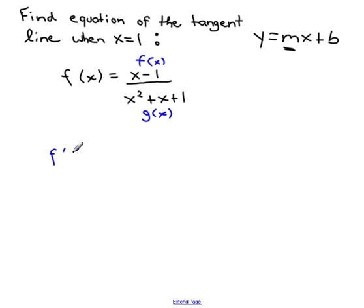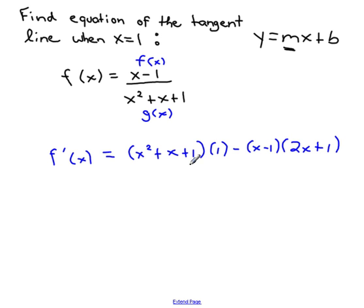So, the rule says to do, f prime of x is going to be, the rule says to do g(x), f prime of x. So, I'm going to recopy g(x). It says, don't touch your g(x), but derive your f(x). What's the derivative of x minus 1? Just 1. What does it then say? It says minus. You then do f(x), which is x minus 1. So, don't touch your f(x), but derive your g(x). What's the derivative of g(x)? x squared becomes 2x. x becomes 1, and the 1 goes away. There's your numerator. And what's your denominator? g(x) prime. What's g(x)? It's x squared plus x plus 1. And they say to square that.